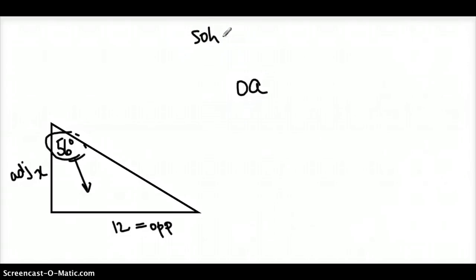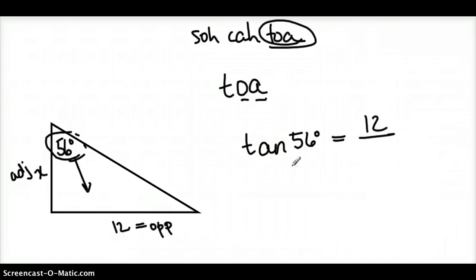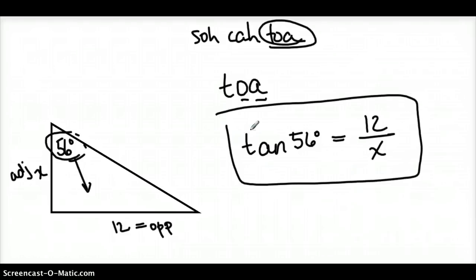So I need the trigonometric function or ratio that uses O and A. So out of SO-CA-TOA, the one that has an O and an A is TOA. So I want to say the tangent of 56 degrees is equal to the opposite, which is 12, over the adjacent, which is X. There I have one equation, one unknown. I can solve that. And we'll learn how to solve that tomorrow. I hope that helps. Thanks a lot.